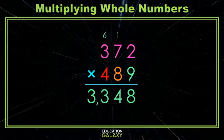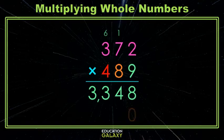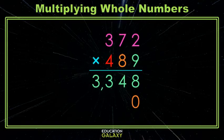Now we move to the 10's place. We are going to multiply 372 by 80, so that's why we put that 0 in the 1's place. Now we can just multiply 372 by 8, and we can kind of forget about our 0.